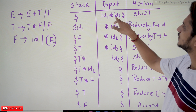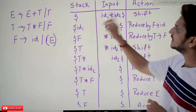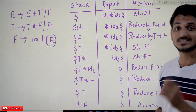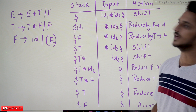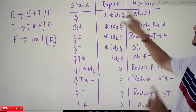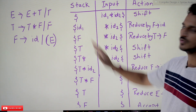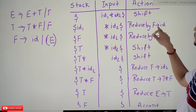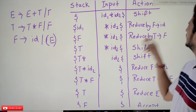The input is id1 * id2, and dollar is added to the end of the input. Why we need to add dollar to the stack and to the input was discussed in our previous classes on top-down parsing. Initially, the first action is shift — id1 is shifted onto the top of the stack.